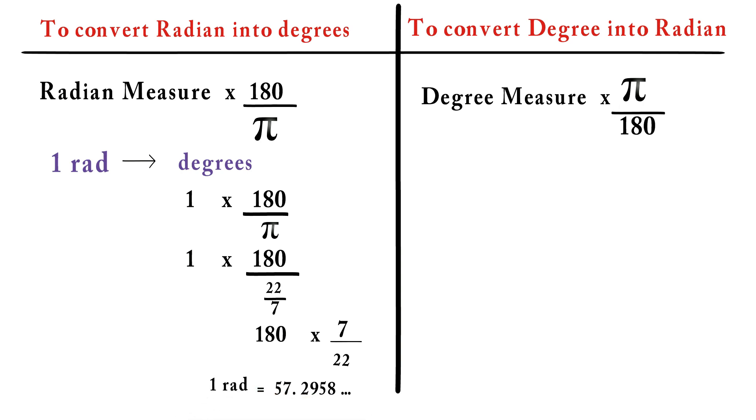Therefore, one radian is 57.2958 degrees approximately.